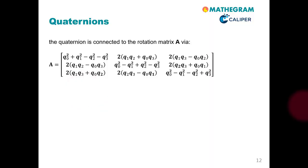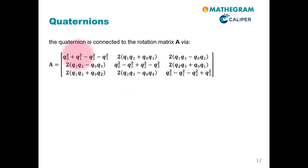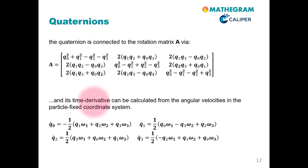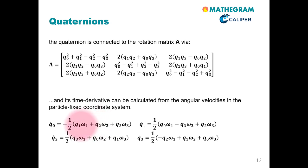I've also promised to show you the connection between the quaternion and the rotation matrix A. It's a comparably simple connection involving just multiplications and square functions. Also very important: the time derivative of each component of the quaternion can be connected to the current state of the quaternion and the angular velocity in the particle-fixed coordinate system. These angular velocities can be obtained by integrating the angular momentum equation in the particle-fixed coordinate system.